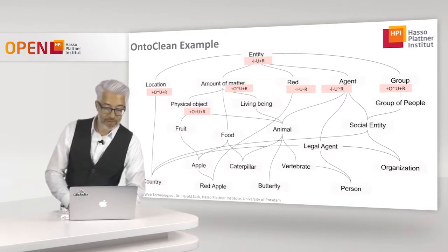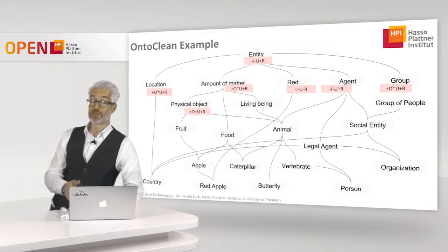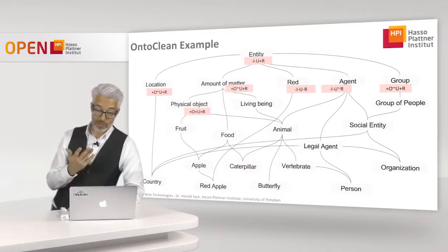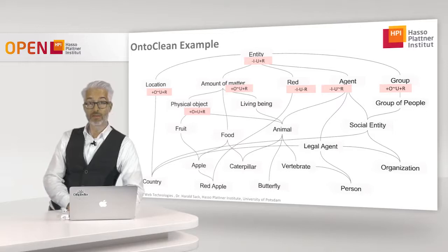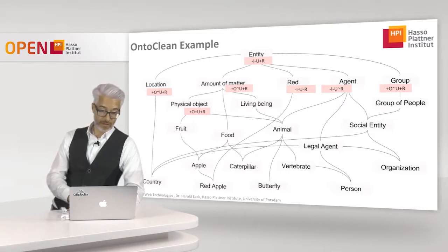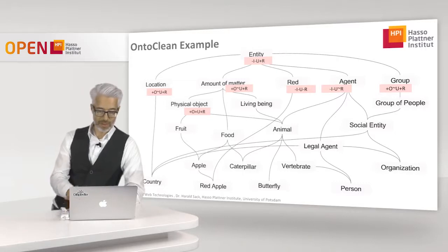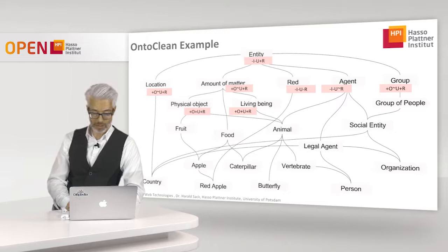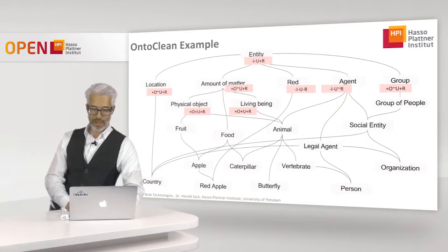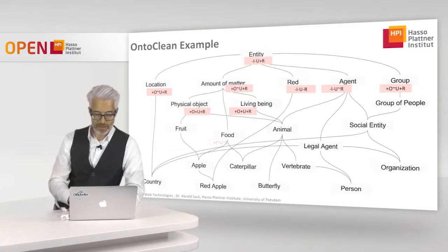A physical object gets a new identity criterion — for example, objects might have names. They are usually considered a whole, so plus U. And if they cease to exist, they are gone — so plus R. The same holds for living beings: we can adopt the same argumentation and use the identical annotation.